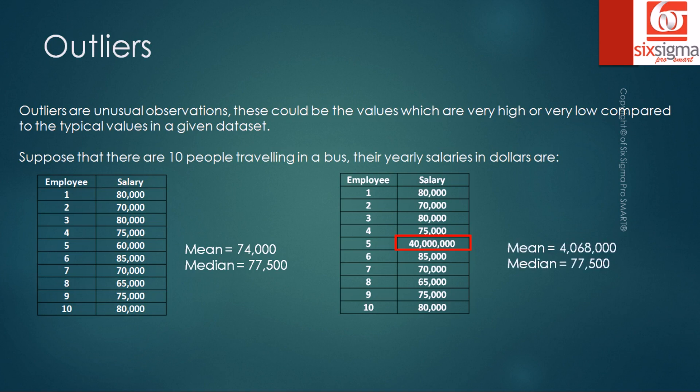What we essentially see here is that the mean now is about 4 million dollars. If we were to talk about that one number which represents the salaries of all the employees in the bus, we'll say that every employee is a millionaire. But the fact is that it's only one person who is a multi-millionaire, rest all are still earning that ordinary salary.